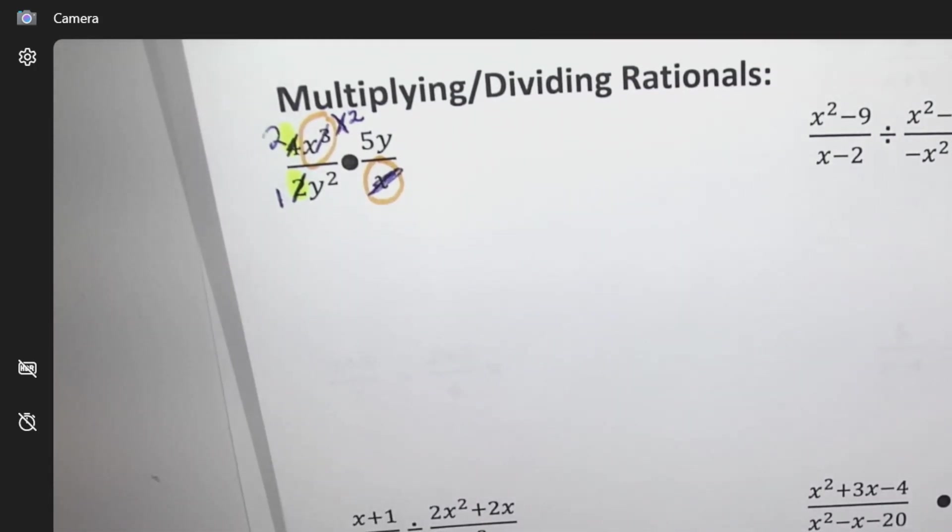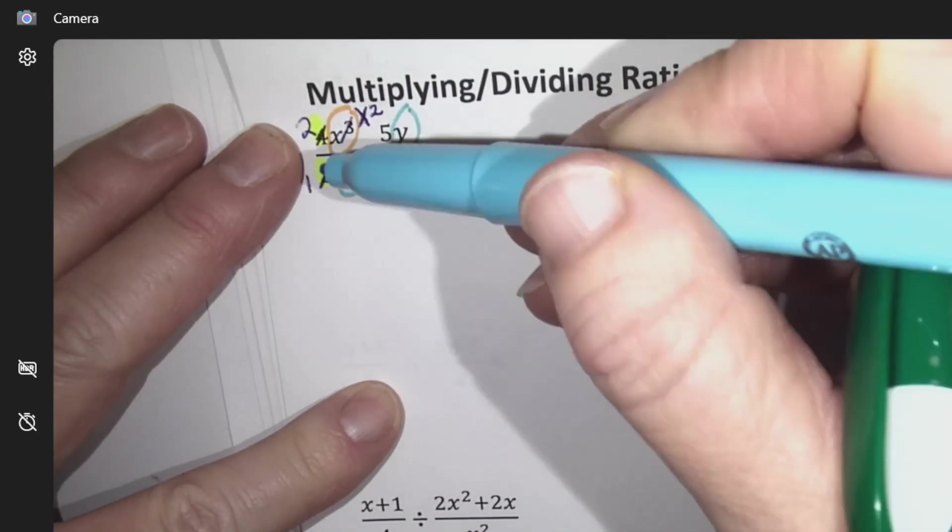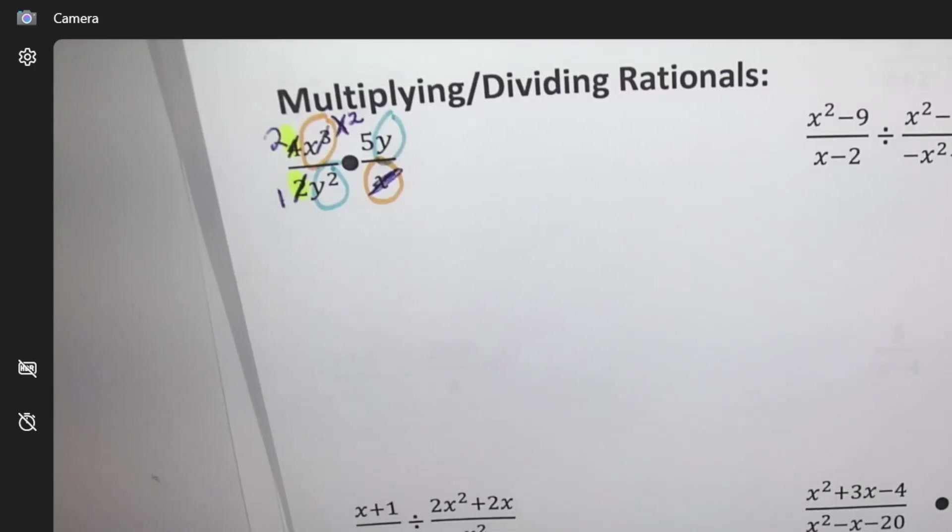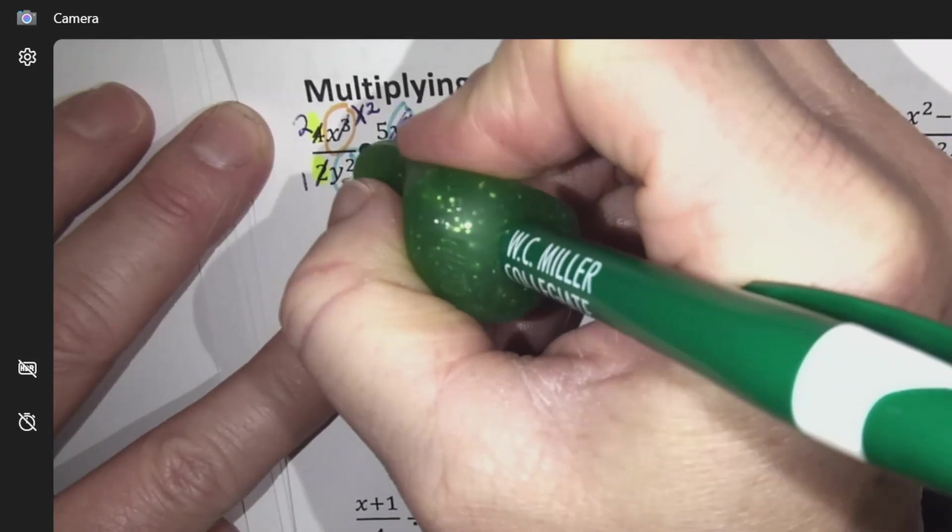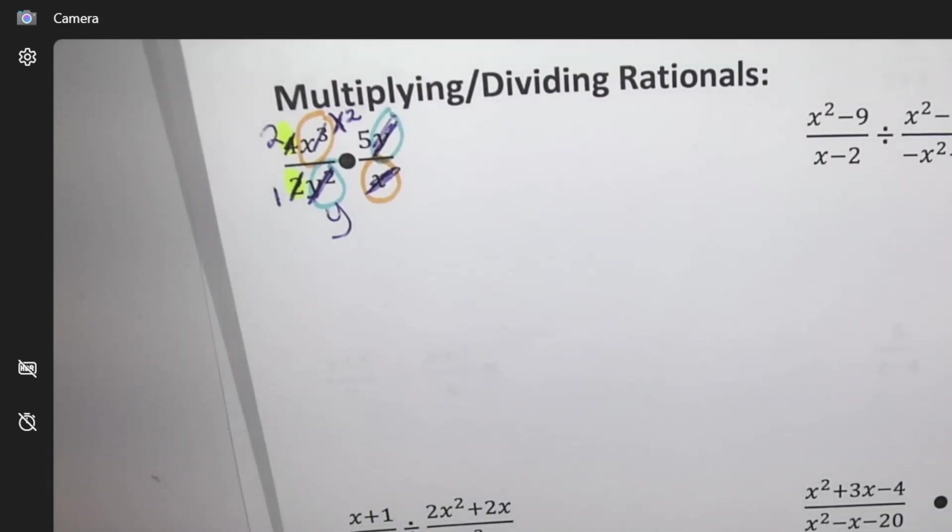And now I'm going to look at the y stuff. So on the top there was a y, bottom there was a y squared, so I'm going to cancel y out. That's the most I can do. So y is out and y squared turns into just a y.